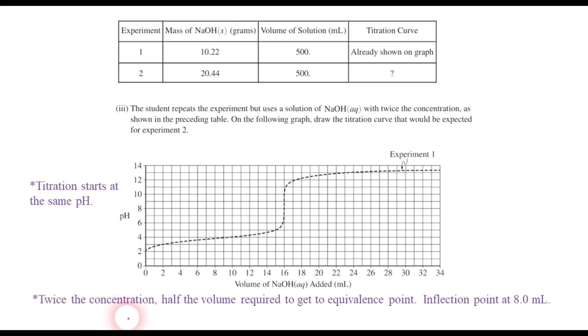So that means that the titration should start at the same pH. Now, since we do have twice the concentration, that means it's going to require half the volume to get to the equivalence point. So our inflection point should be at 8 milliliters instead of at 16. And we should also remember that at the halfway point, pH equals pKa, which is 3.9. But this time, the halfway point is not 8 milliliters like it was before. It's 4 milliliters.